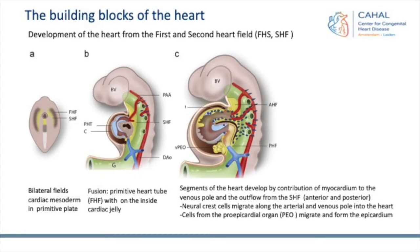You have the building blocks of the heart. If you look at development, it comes from the first and second heart field. You have the bilateral fields of the cardiac mesoderm in a primitive plate that fuses, and then you get this primitive heart tube from the first heart field with the endocardial jelly. Then in yellow, you have the second heart field, which contributes to the myocardium on the outflow tract for the right ventricle and on the inflow for the sinus venosus.